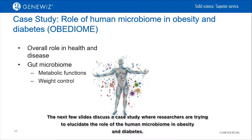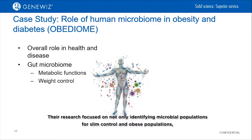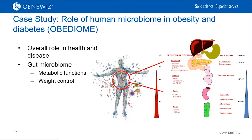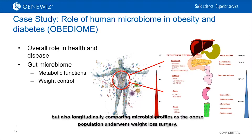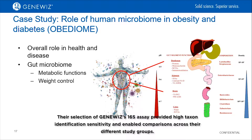Their research focused on not only identifying microbial populations for slim and obese populations, but also longitudinally comparing microbial profiles as the obese population underwent weight loss surgery. Their selection of GeneWiz's 16S assay provided high taxon identification sensitivity and enabled comparisons across their different study groups.